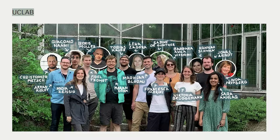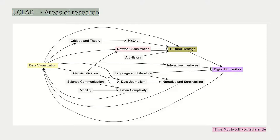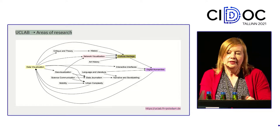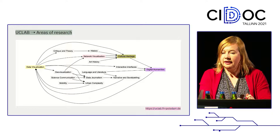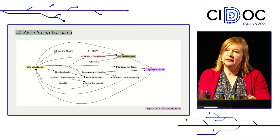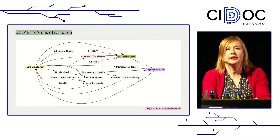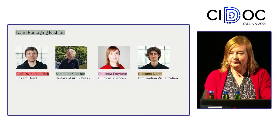Here you can see our team of the UC Lab at the University of Applied Science. We are an interdisciplinary group of researchers with one topic in common: visualization. We follow this approach from different angles. Data visualization is our main topic, but we also work on cultural heritage data, network visualization, and research projects linked to the digital humanities. We also have projects dealing with climate change data, geo-visualization, and critique and theory in terms of visualization.